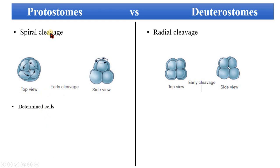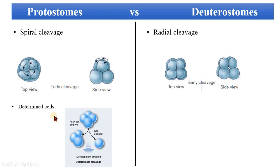Protostomes have determined cells. What is determination of cells? When each cell of the embryo has a special function to perform and a special structure to make, it is called determination of the cells. They are given a specific function or structure. So if we cut a cell from the embryo, the development of that embryo will be arrested because the specific structure that cell was going to make is no longer present.